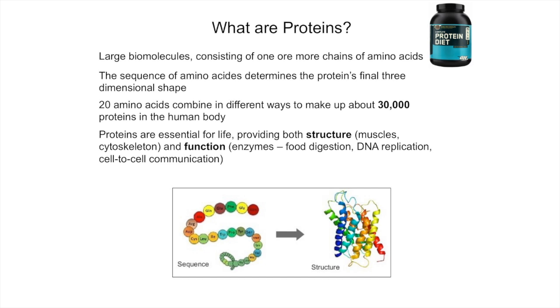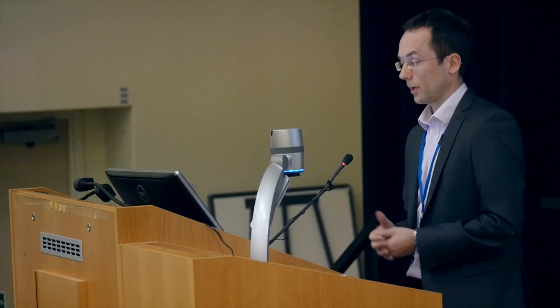Proteins are actually essential for life. There are millions of proteins on Earth, and 30,000 of these are found in the human body — and amazingly, all these proteins are coded by a finite set of 20 amino acids. That's truly mind-boggling. Proteins are essentially involved in all reactions that constitute life: they participate in food digestion, creating energy from oxygen and food, they're essential for DNA replication, for communication between cells, but they also provide structure, such as for muscles and cytoskeletons.